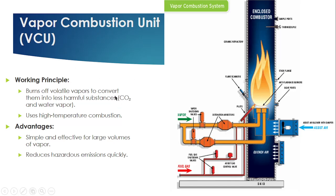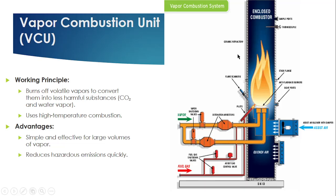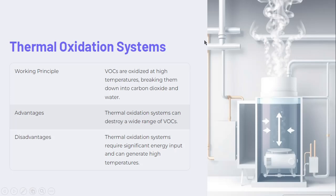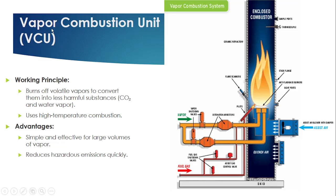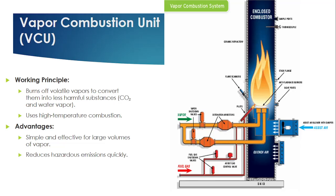The vapor combustion unit uses thermal oxidation — a high temperature combustion process — to dispose of the volatile organic compounds. It is a simple and effective way to handle large volumes of vapor and also reduces hazardous emissions quickly. The difference between VCU and VRU is that in VCU there is no recovery — it converts the vapor by burning it. The disadvantage is that it requires significant energy due to high temperature combustion and generates high temperatures.